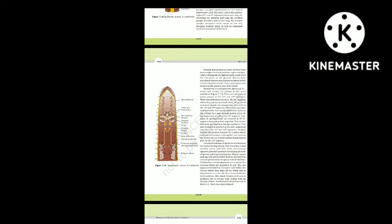One pair of ovaries is attached at the intersegmental septum of segments 12 and 13. Ovarian funnels present beneath the ovaries continue into oviducts, join together and open on the ventral side as a single median female genital pore on the 14th segment. A mutual exchange of sperm occurs between two worms during mating — they juxtapose opposite gonadal openings and exchange packets of sperms called spermatophores. Mature sperm, egg cells and nutritive fluid are deposited in cocoons produced by the gland cells of the clitellum. Fertilization and development occur within the cocoons, which are deposited in soil.